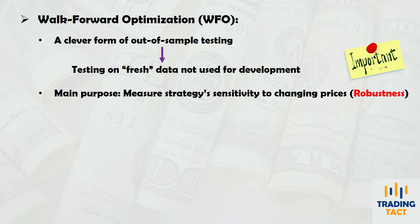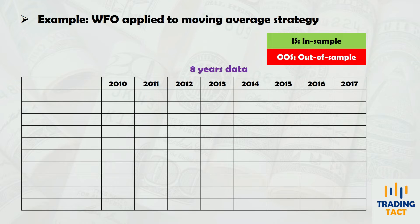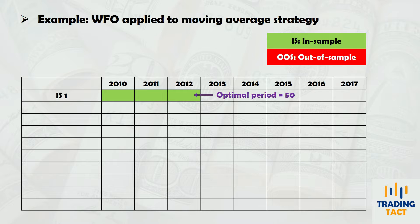Let me illustrate how walk-forward optimization works. Suppose you apply it to a basic moving average crossover strategy, where you go long when the price closes above the moving average and vice versa for shorts. You have eight years of data at your disposal. After optimizing over the first in-sample period from 2010 to 2012, you determine that the optimal moving average period is 50. You then test your 50-period moving average over the 2013 data.